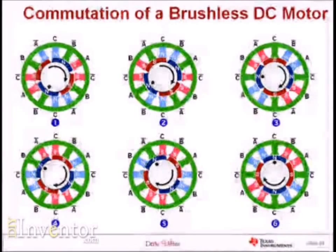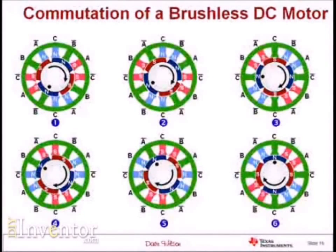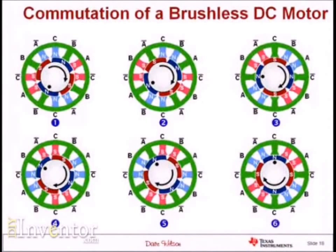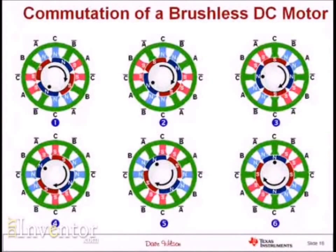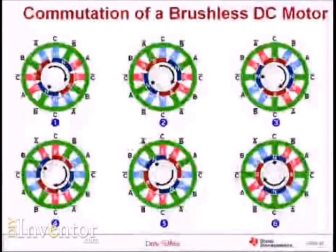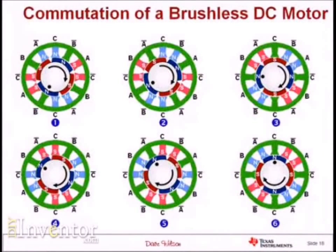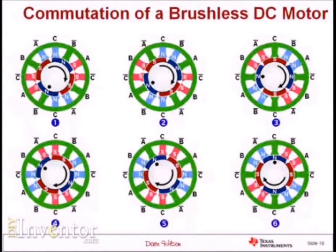After commutating through all six commutation intervals, if you follow the dot on the rotor as it spins, 360 electrical degrees has only resulted in 180 mechanical degrees. The reason for that is this particular motor has a four-pole magnet on the rotor. You take the number of poles on the rotor, divide by two, and that becomes the multiplication factor between electrical degrees and mechanical degrees.